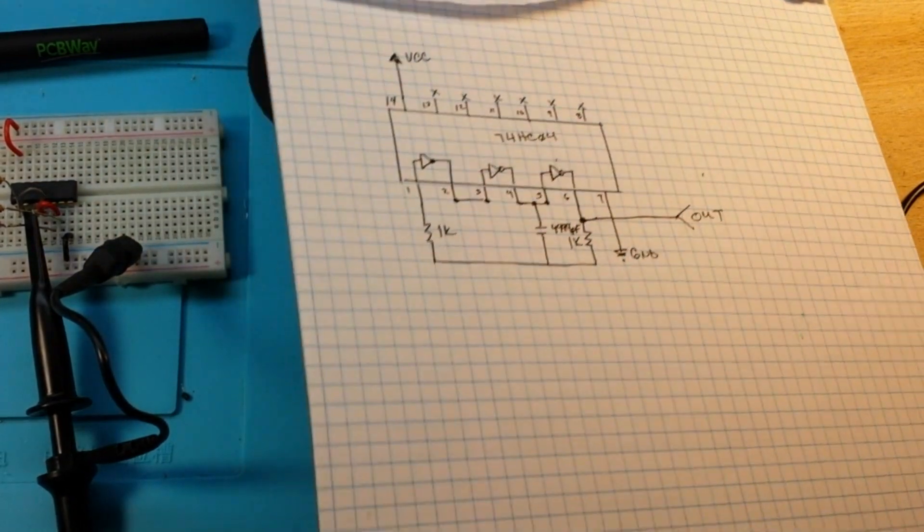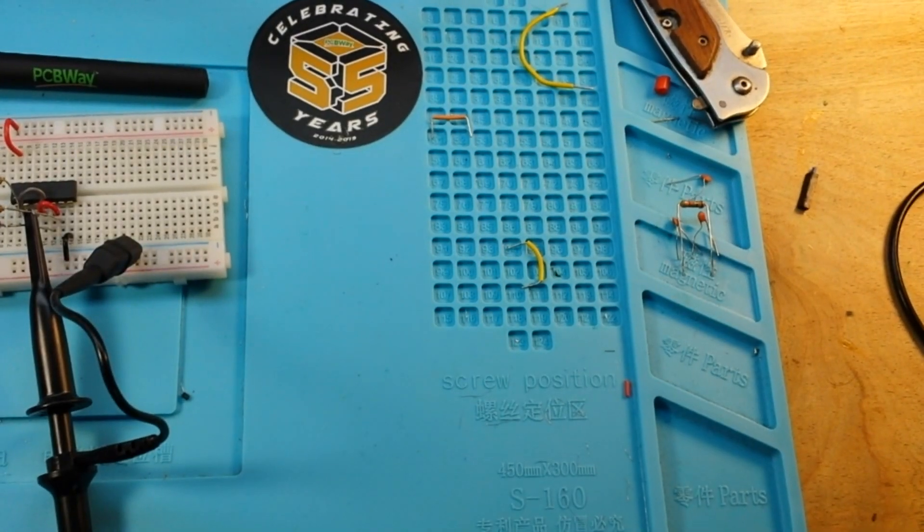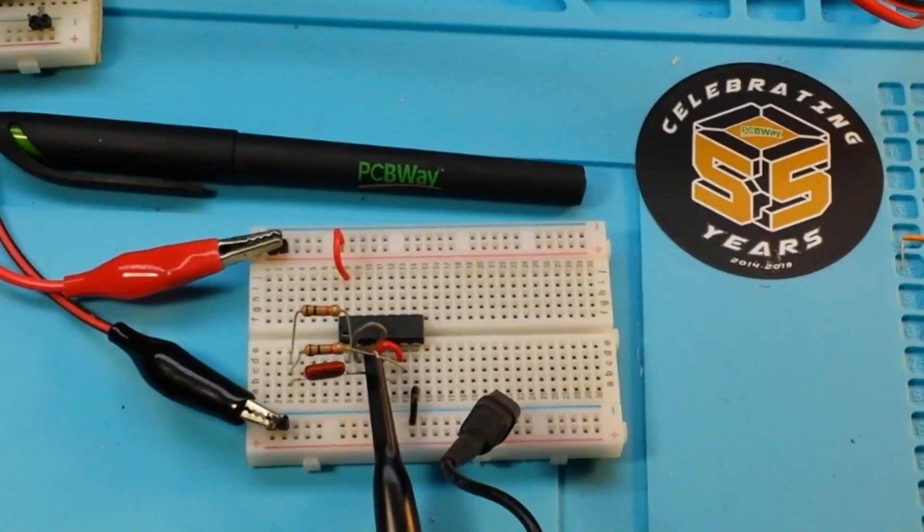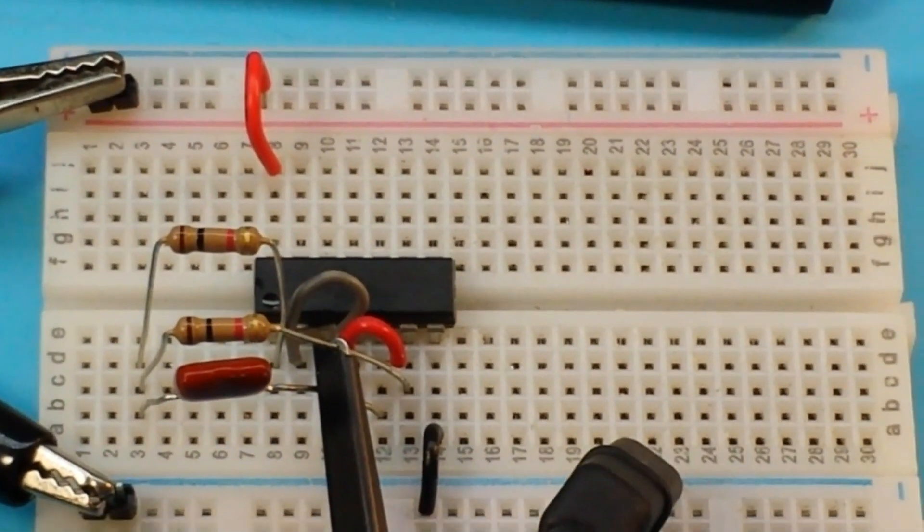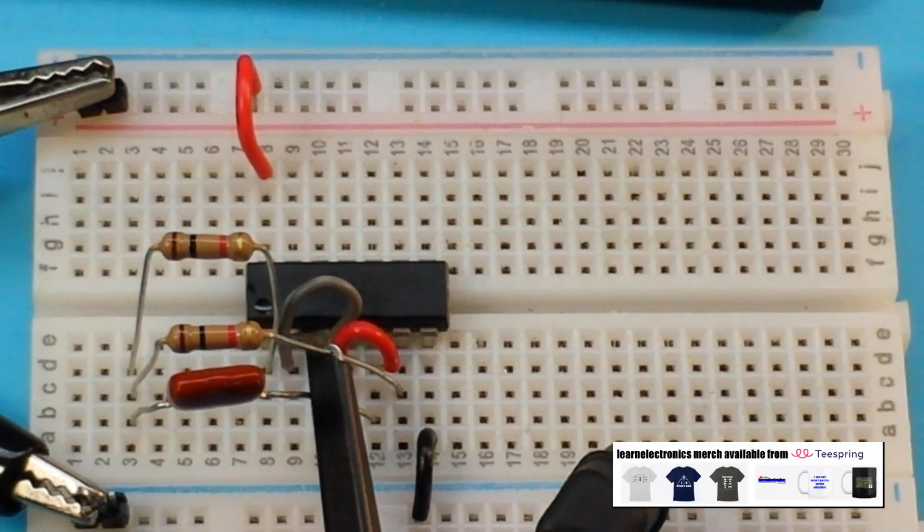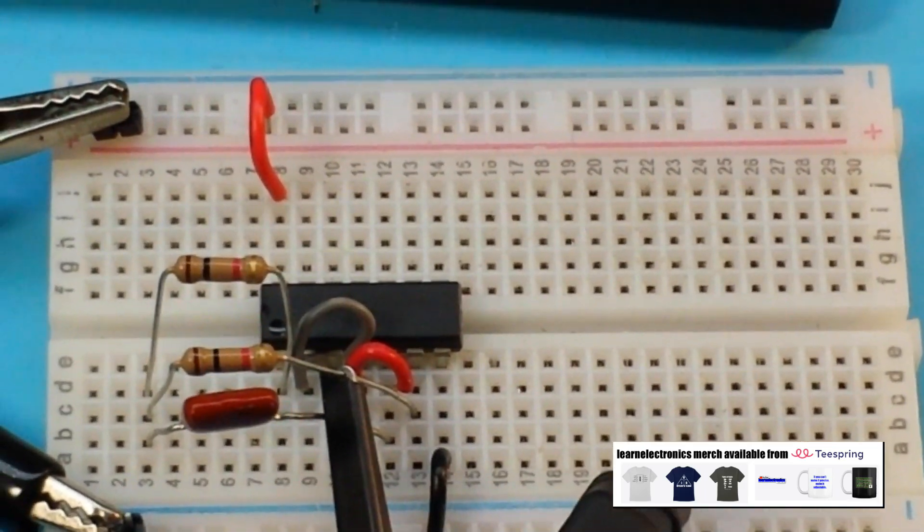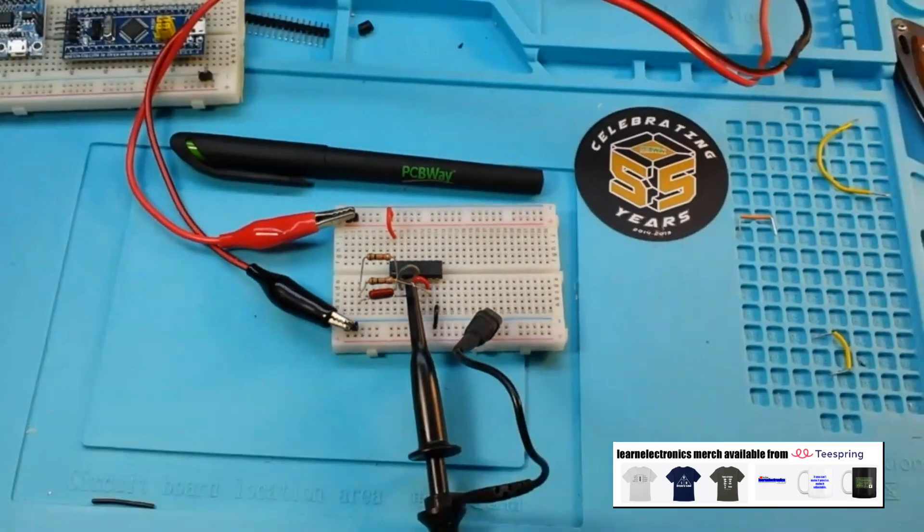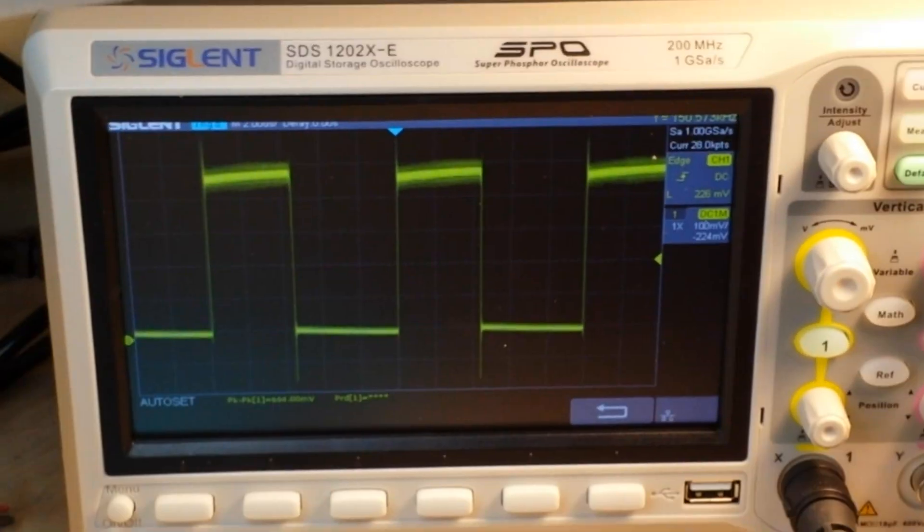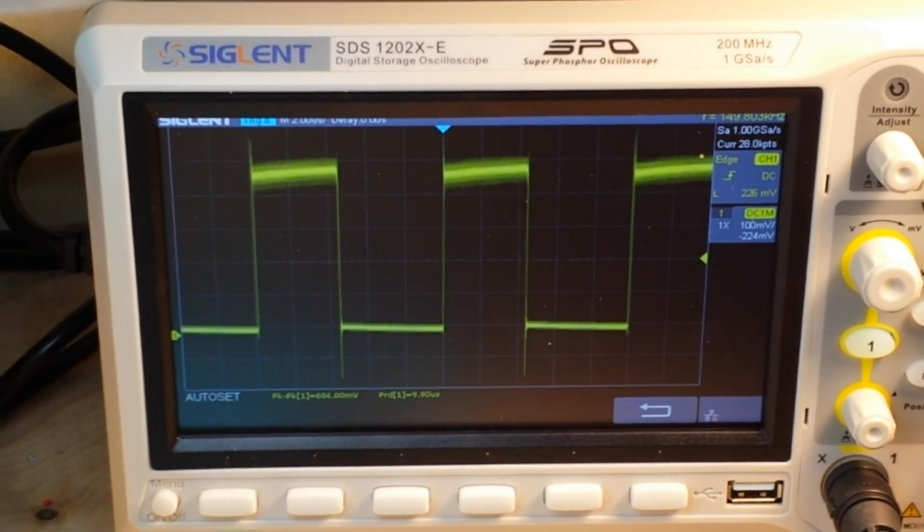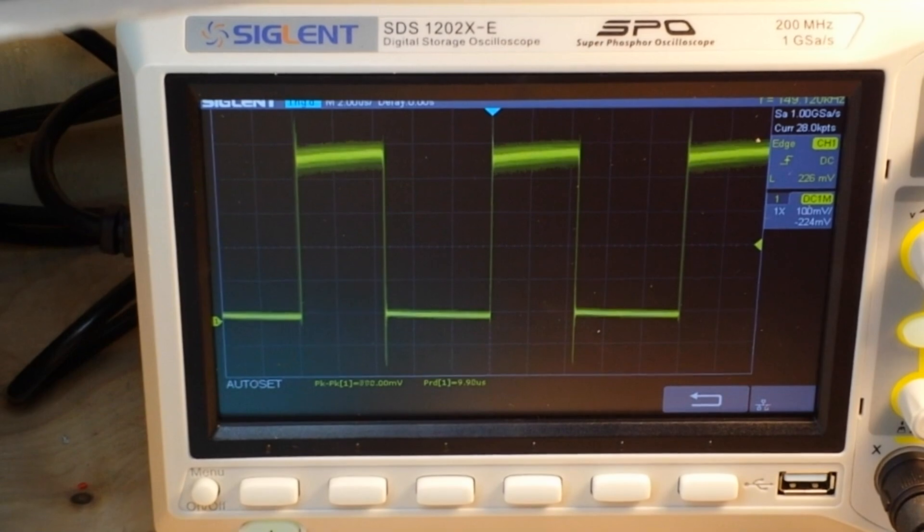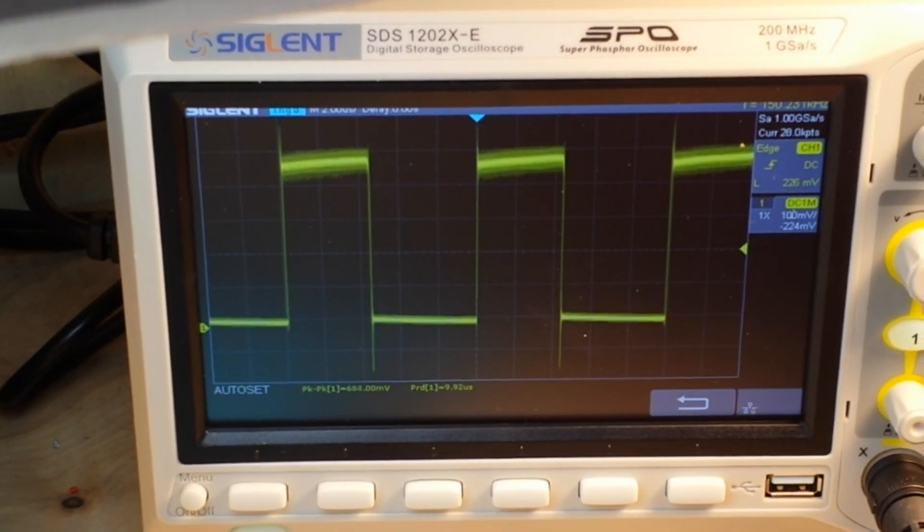So there you have one way, a very old way, of building a ring oscillator using a 74HC04. It's pretty simple. Only three components needed. And you do end up getting a decent square wave. So I hope you guys enjoyed this. If you did, give me a thumbs up. Feel free to comment, share, and don't forget to subscribe.